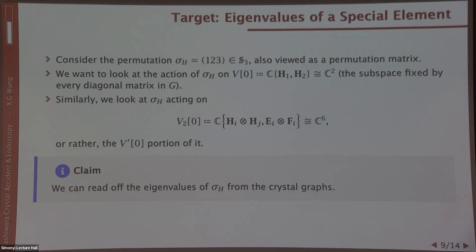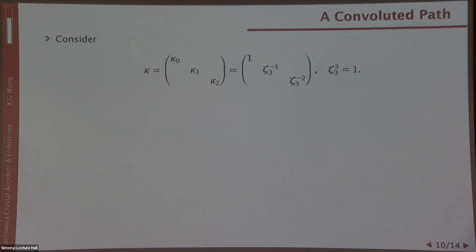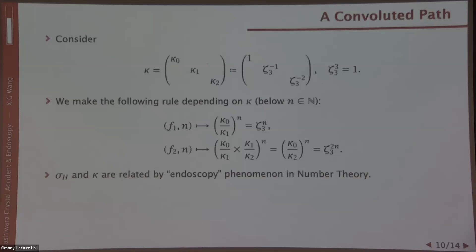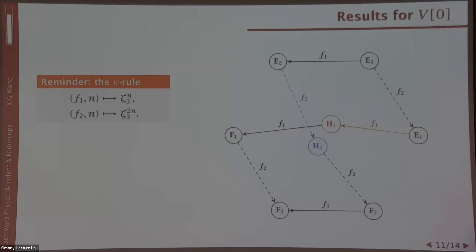The claim is we can recover the action or eigenvalues of sigma h using the crystal graph of V and V2. By itself, it's just a linear algebra exercise, but because we have smoked so many crystals, we now forgot how to do linear algebra. Instead, we hallucinate, and we got this kappa matrix. This is a special matrix—zeta 3 is the third root of unity. And we make this following bizarre looking rule, which I'll explain later. Sigma h and kappa are related by the endoscopic phenomena in number theory. The more precise claim is that the action of sigma h can be recovered using crystal graph and the kappa rule above.